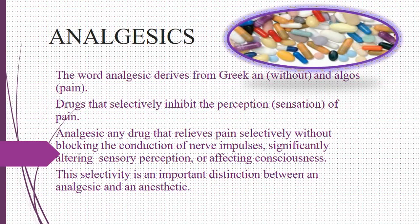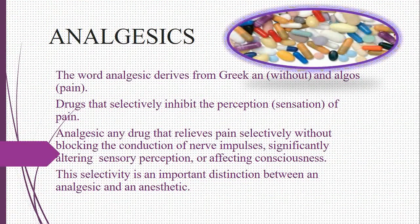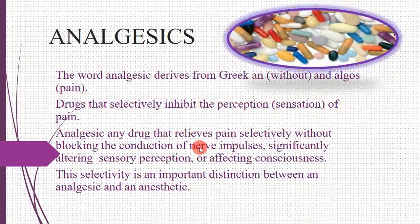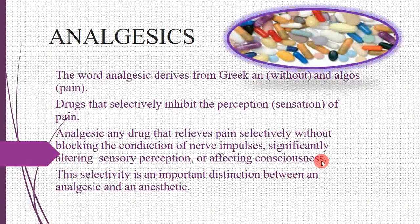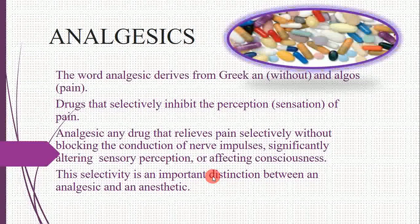Drugs that selectively inhibit the perception and sensation of pain are known as analgesics. Analgesics can be defined as any drug that relieves pain selectively without blocking the conduction of nerve impulses, significantly altering sensory perception, or affecting consciousness.